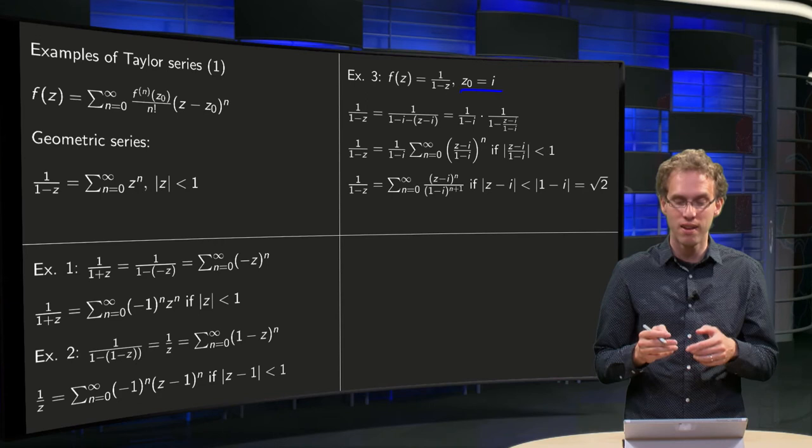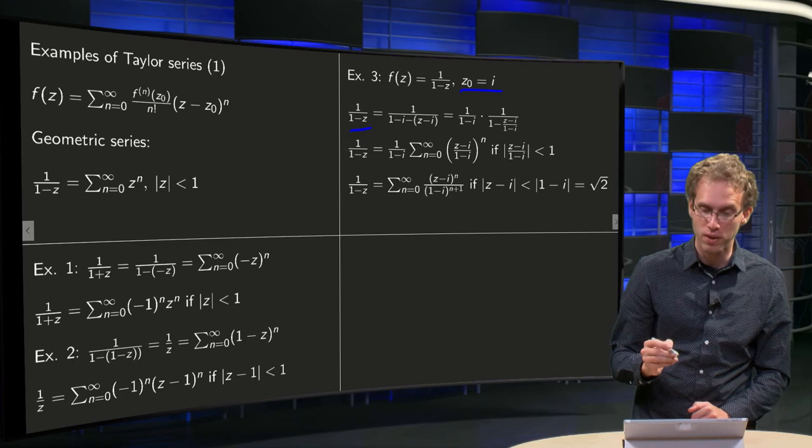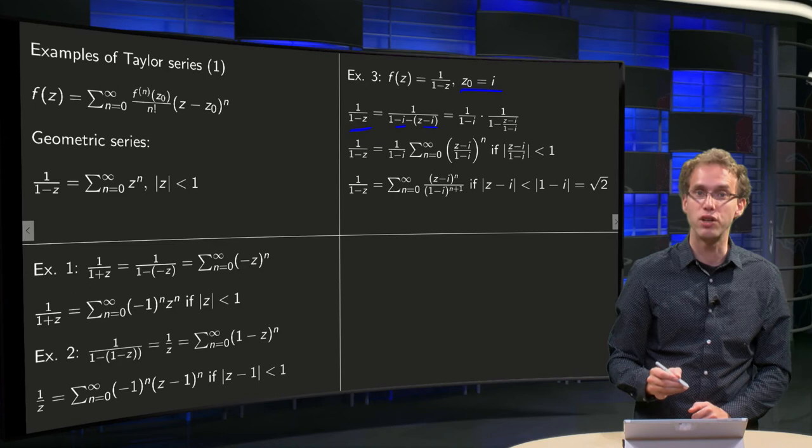So we want to have something like 1 minus, but now centered around i. Well, we know 1/(1-z), that's a nice one, equals we subtract an i and we add an i.